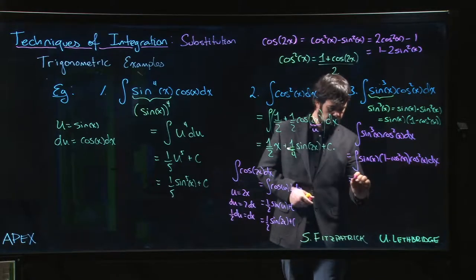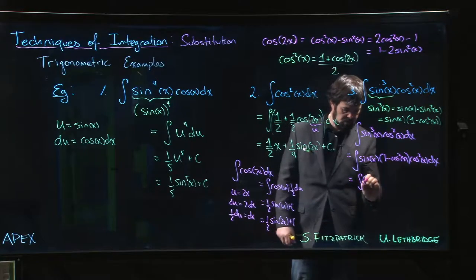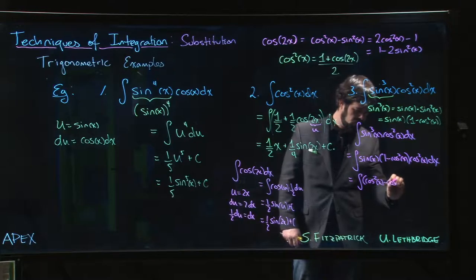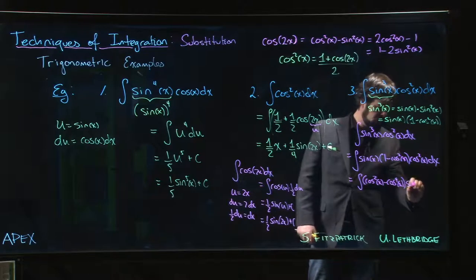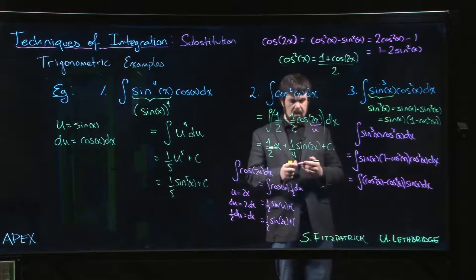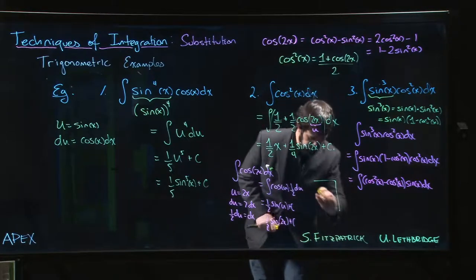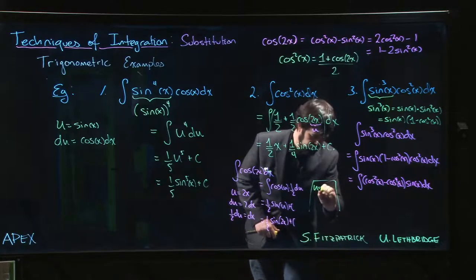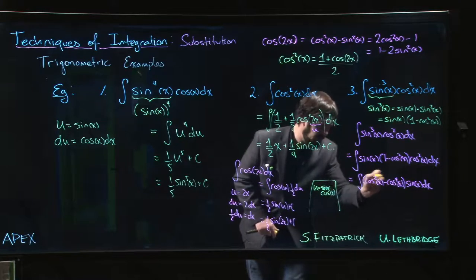And let me multiply that out: cos squared x minus cos to the 4th power times sine x times dx. And now there's a more obvious substitution. This suggests that we should let u equal cosine, because we see the powers of cos there.